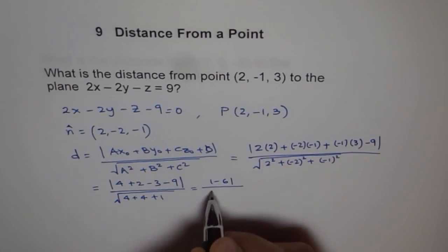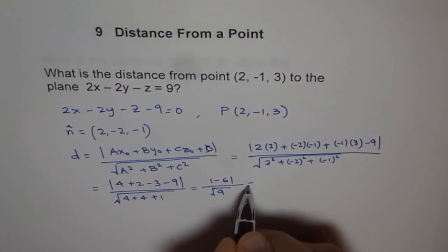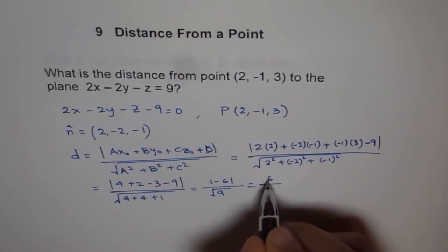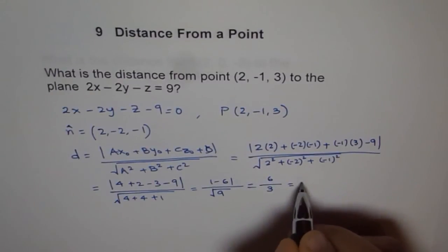And here it is 4 + 4 + 1, square root of 9. So that's 6 over 3, which is just 2.